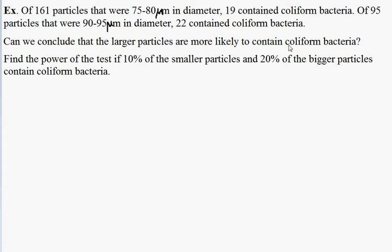The first part of the question asks: can we conclude that the larger particles, 90 to 95 microns, are more likely to contain coliform bacteria? This concerns two different proportions. Our null hypothesis will be that the two proportions are the same, so that the difference between them is zero.